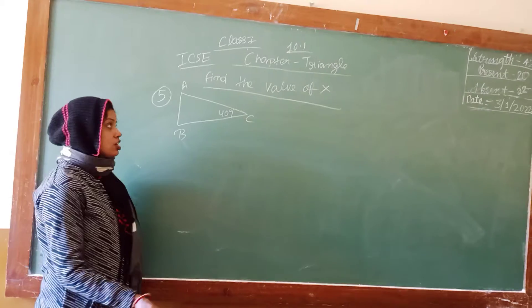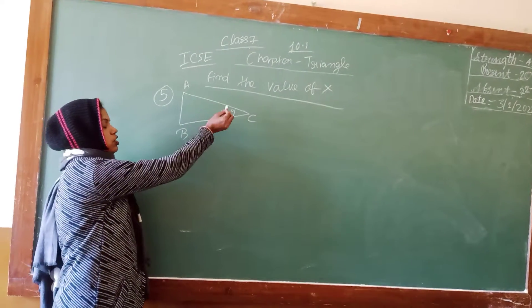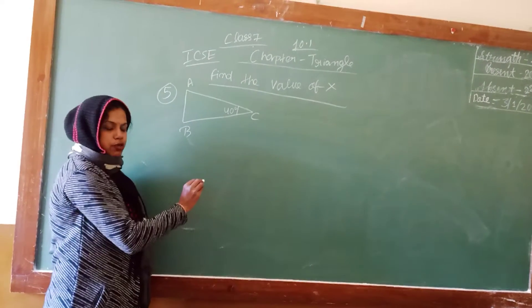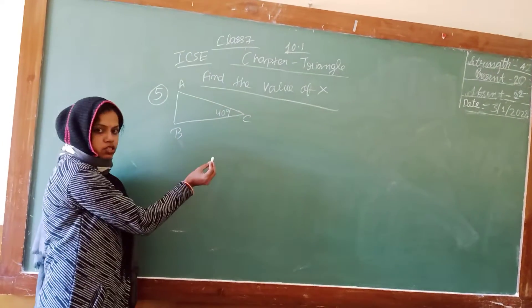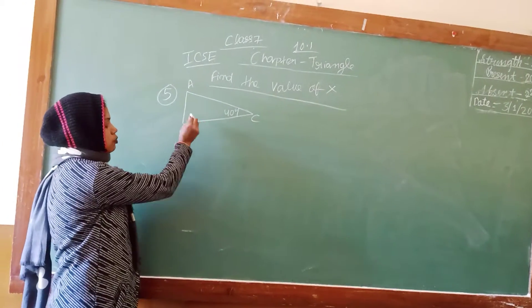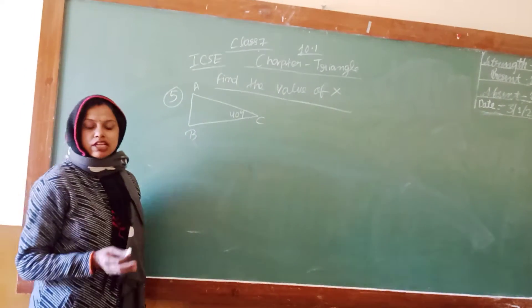Hello students, today I am going to teach you one question from the chapter triangle. You can see here, find the value of x. We know that the property of triangle is that the addition of three angles would be 180 degrees.